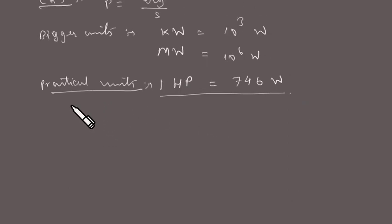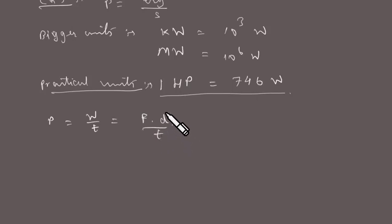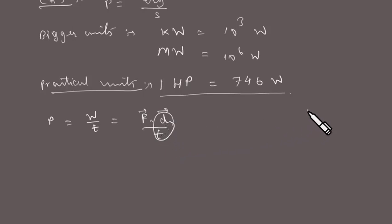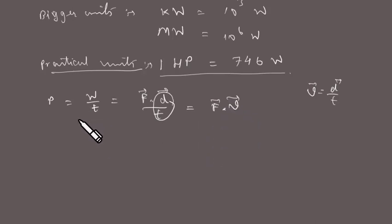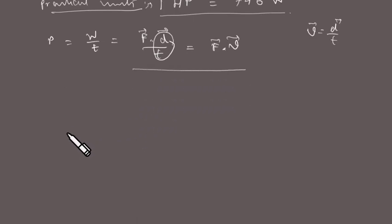Power equals work by time, and work equals force into displacement. So P = F·d / t. Since displacement divided by time is velocity, we can write P = F dot v, or simply F times v times cos theta. Power is thus the dot product of force and velocity.